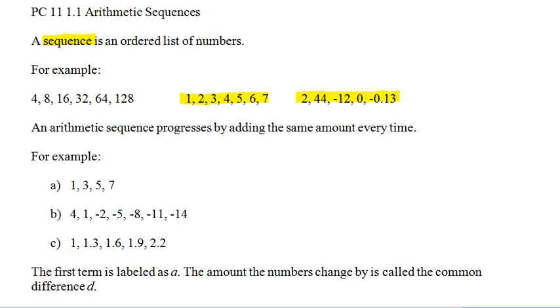Well, a sequence doesn't need to have a pattern. It's just a list of numbers in order. So, 2 is the first number, 44 is the second number, negative 12 is the third number. That qualifies it as a sequence. Obviously, random sequences like that aren't very interesting. The first type of pattern sequence we're going to look at is an arithmetic sequence. We get that by adding the same amount every time. So, for example, in A here, we go 1, 3, 5, 7.